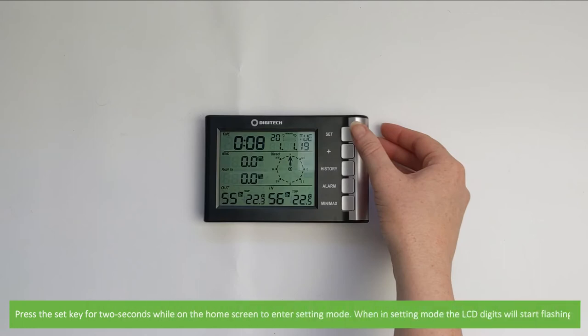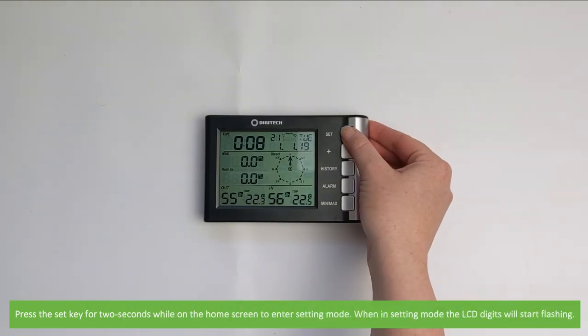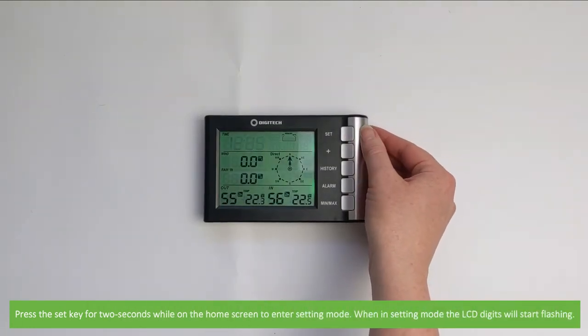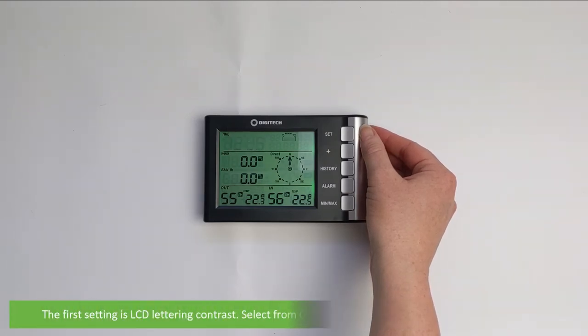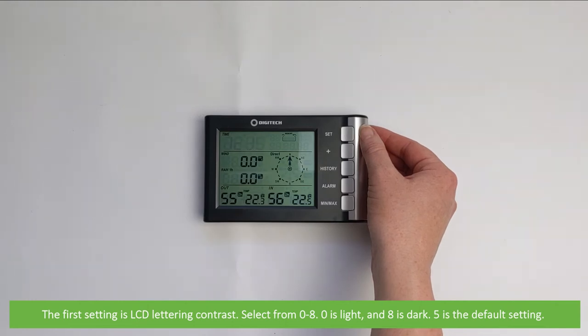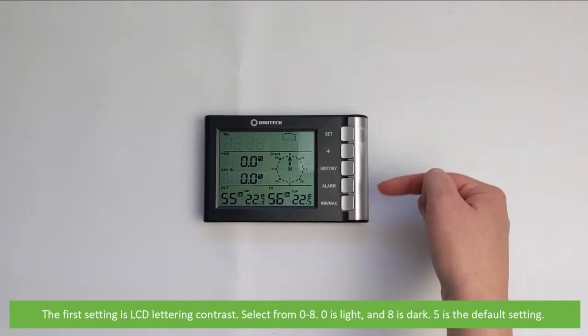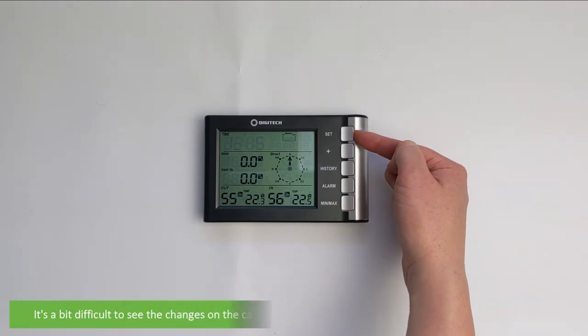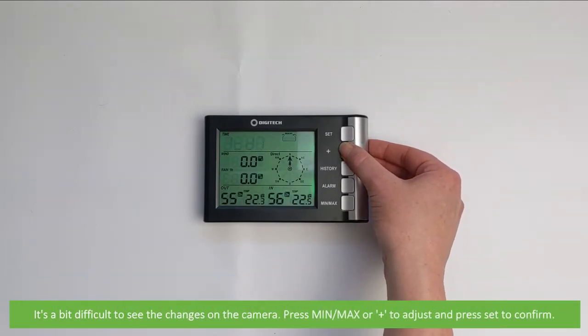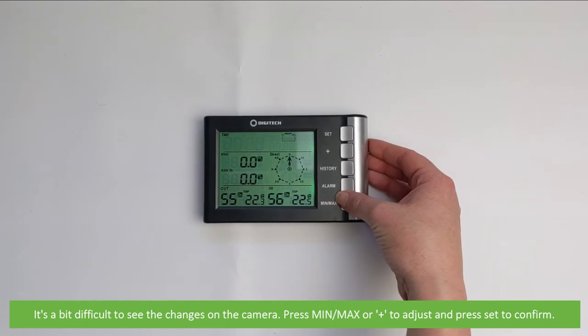Press the set key for 2 seconds while on the home screen to enter setting mode. When in setting mode, the LCD digits will start flashing. The first setting is LCD lettering contrast. Select from 0 to 8. 0 is light and 8 is dark. 5 is the default setting. It's a bit difficult to see the changes on the camera. Press the min max or plus button to adjust and press Set to confirm.